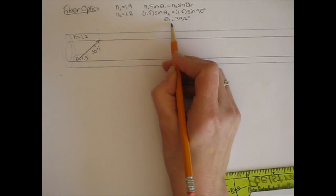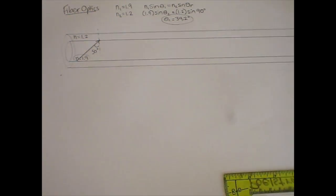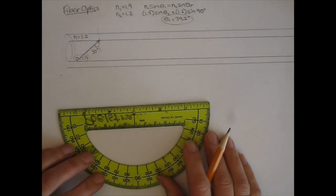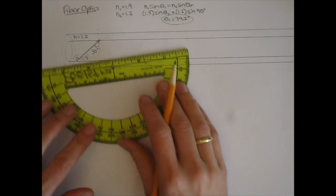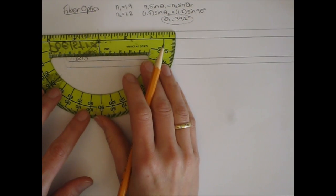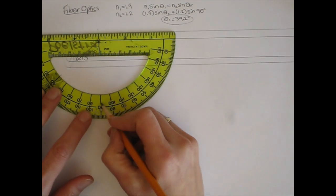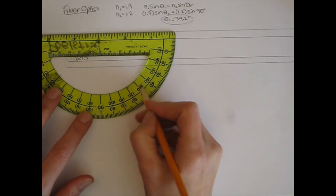it will have total internal reflection. Well, reflected angle is equal to the incident angle. So I just need to measure 50 degrees from the normal. 10, 20, 30, 40, 50.